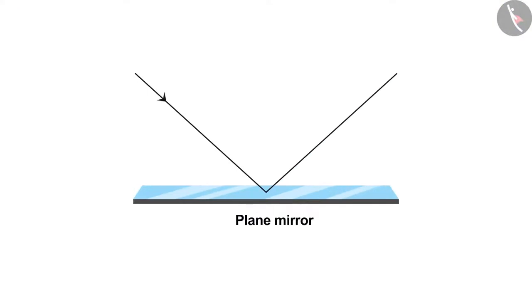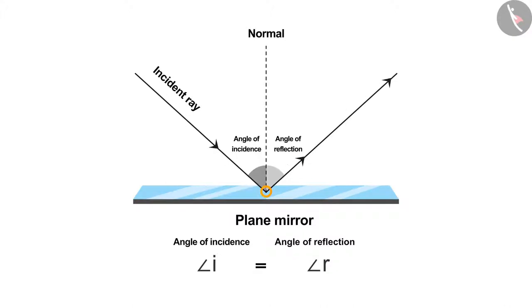Number 1: The angle of incidence is always equal to the angle of reflection. Number 2: The incident ray, the normal to the mirror at the point of incidence, and the reflected ray, all lie in the same plane.